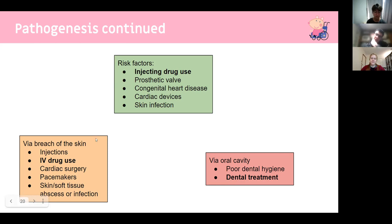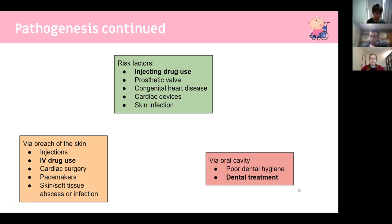There are two main pathogen entry routes: via the skin through IV drug use, pacemakers, or infection; and via the oral cavity through dental treatment. Streptococcus viridans is a key buzzword that will likely appear in your exams as the causative agent following dental procedures.